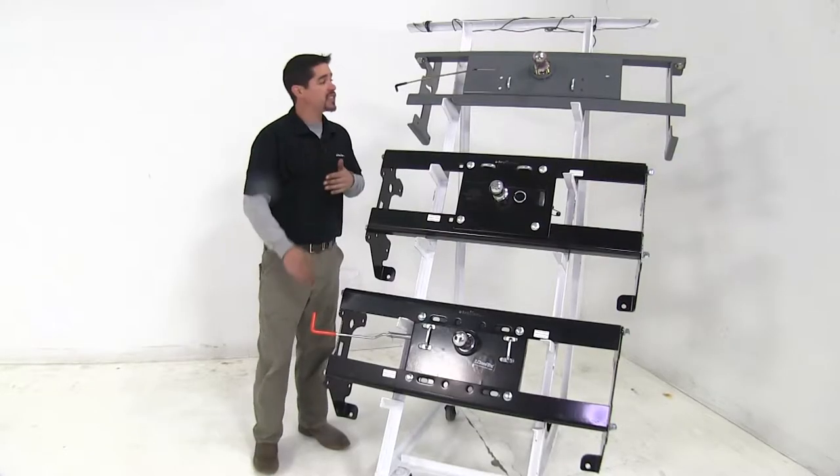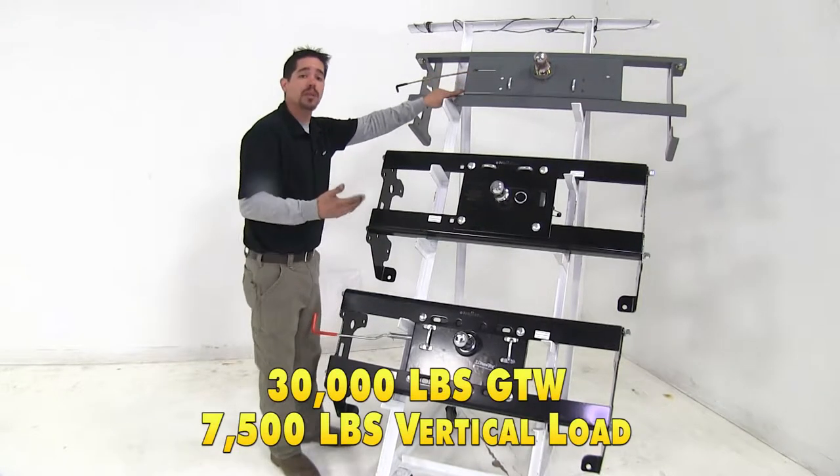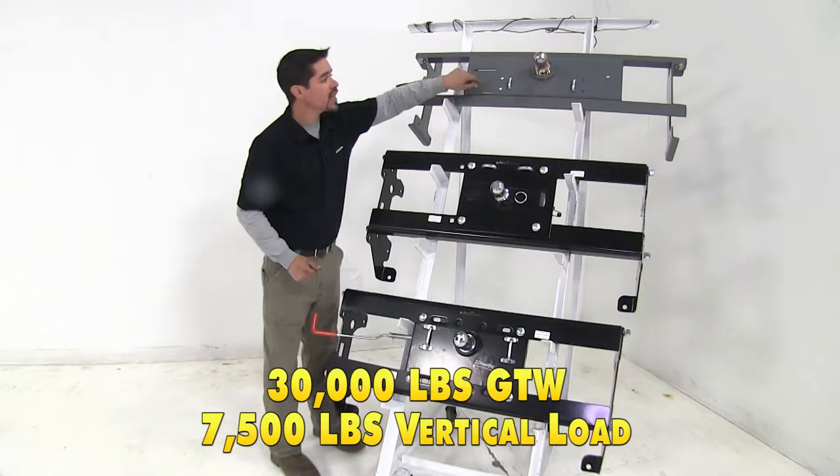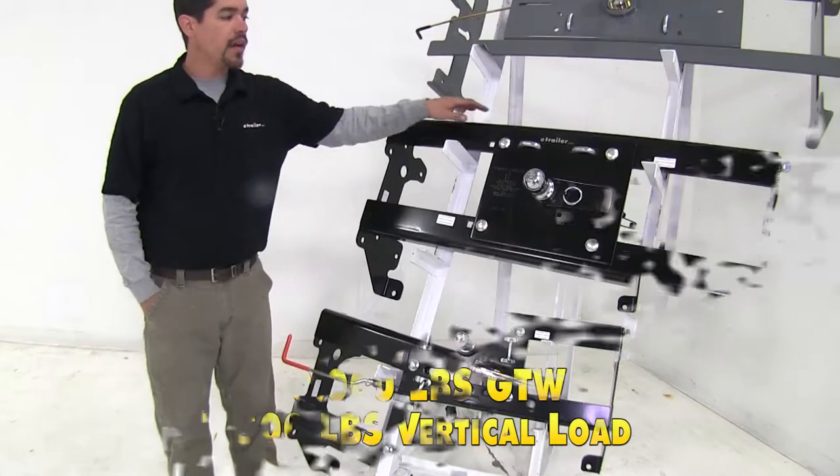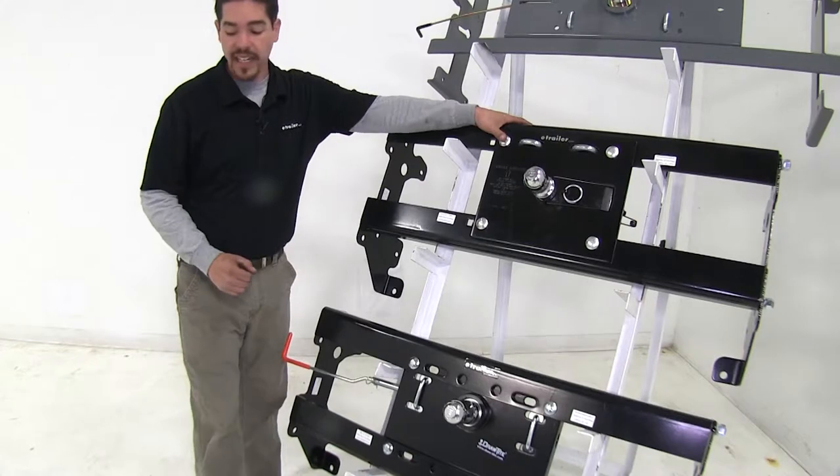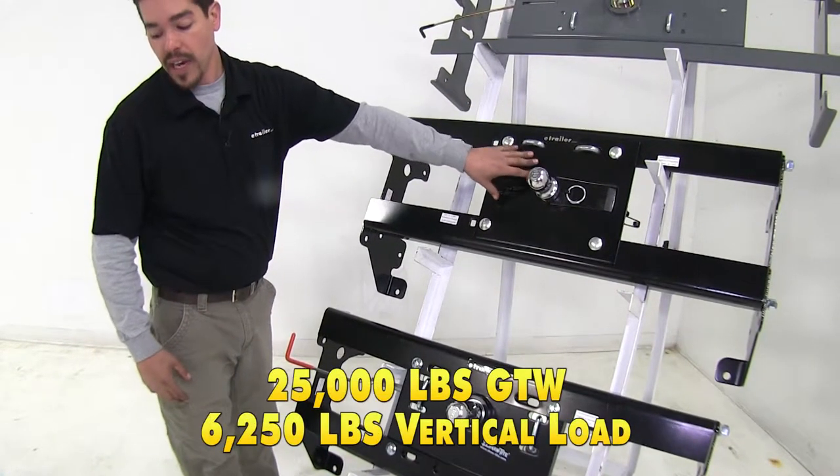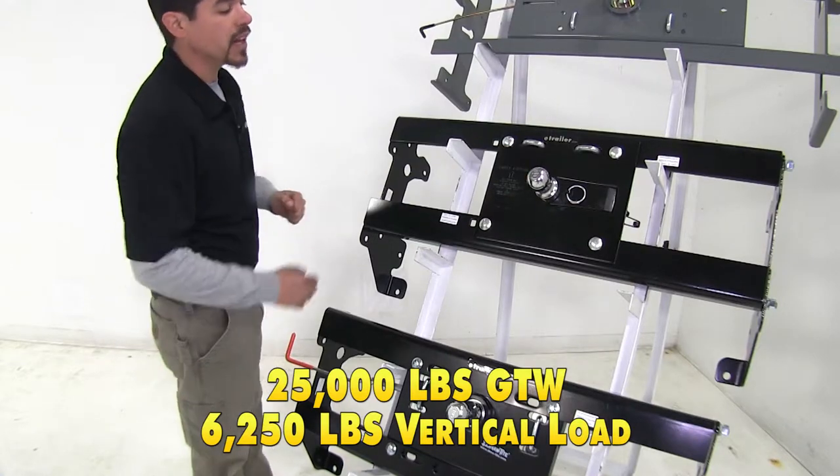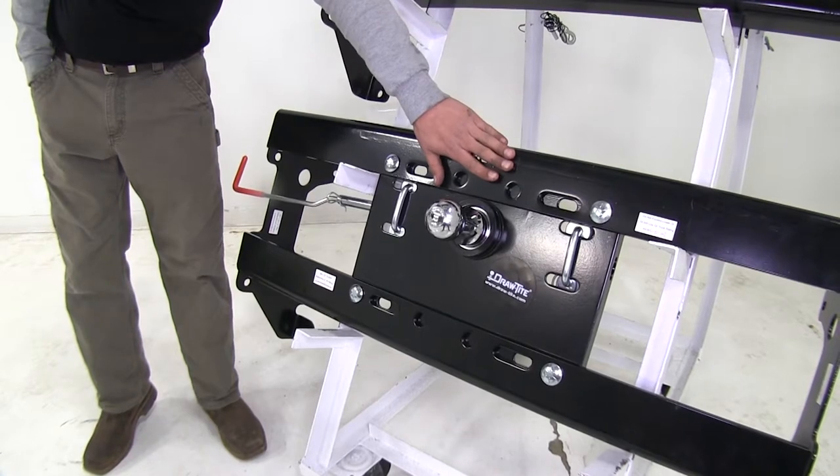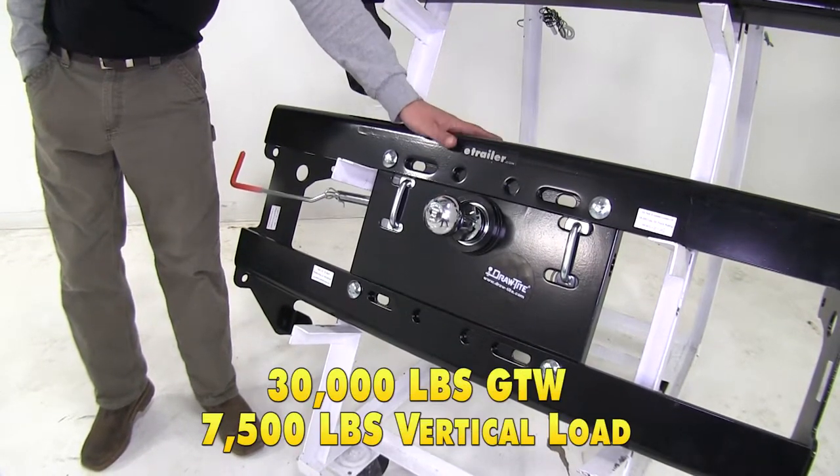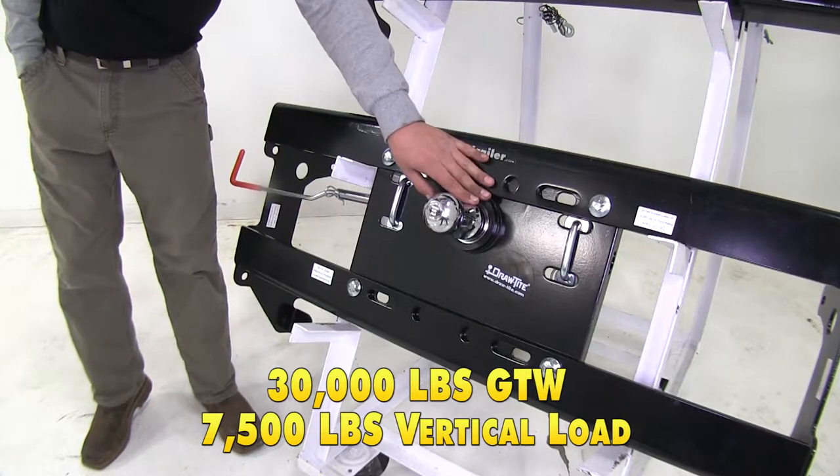Now as far as weight capacity goes, our B&W turnover ball here is going to have a 30,000 pound gross trailer weight rating and the vertical load limit is going to be 7,500 pounds. Now our Drawtite fold down gooseneck is going to have a 25,000 pound gross trailer weight rating and a 6,250 pound vertical load limit. Finally our Drawtite Hide-a-Goose here is going to have a 30,000 pound gross trailer weight rating and a 7,500 pound vertical load limit.